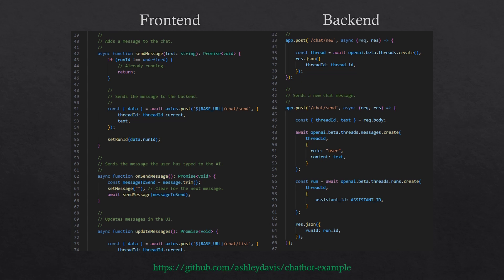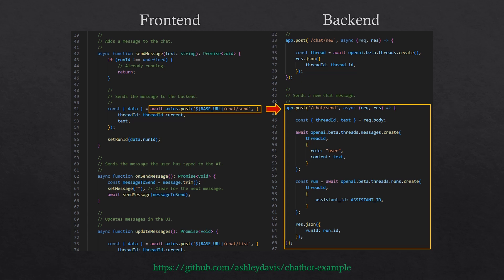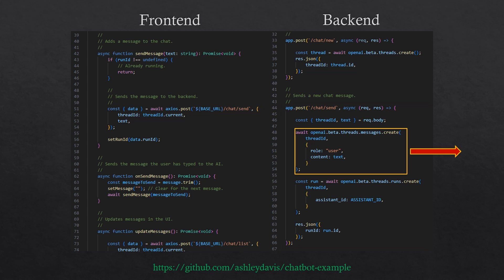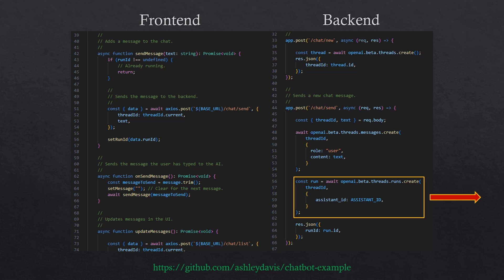The next thing we need to do is send messages that the user has typed to the chatbot. A bit further down in the front-end and back-end code, we can see how a new message is added to the thread. The user has typed a message into the input and clicked the send button, which calls the send message function. The front-end makes an HTTP POST request to the back-end to send the message. The back-end then does two things: it calls a function in the OpenAI code library to create the message and send it to the OpenAI API — adding it to our chat thread — and then calls the create run function, which starts the OpenAI API processing the message thread and generating a response.